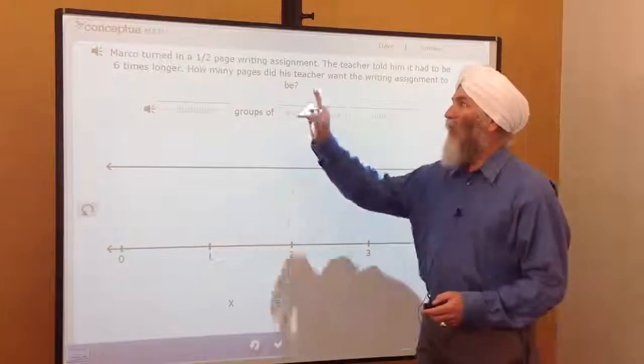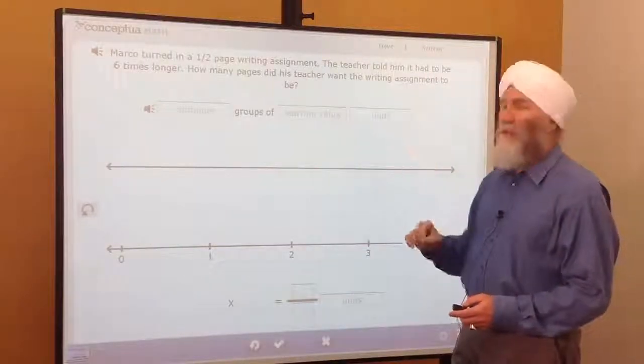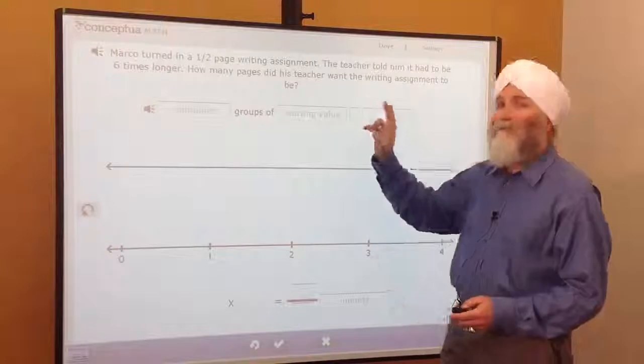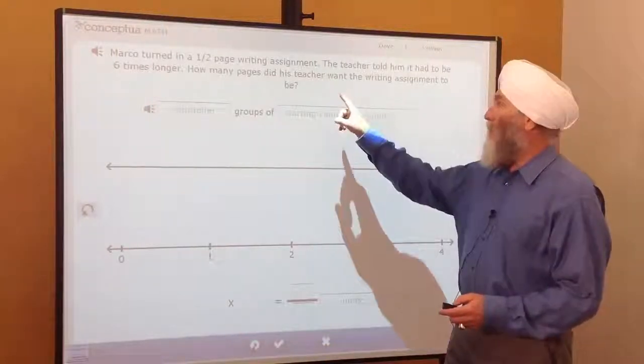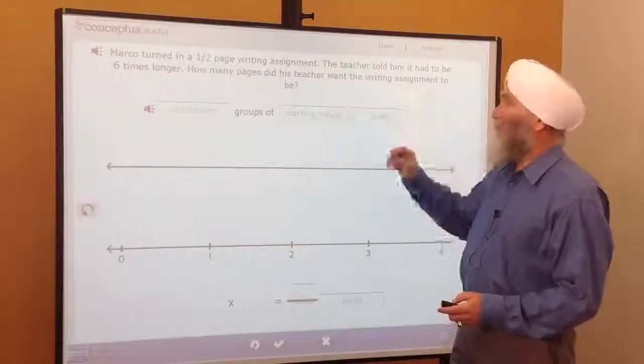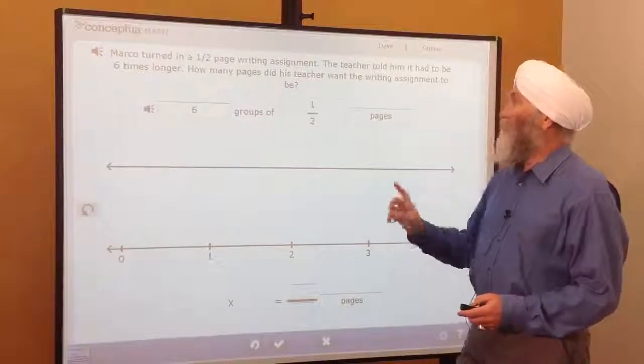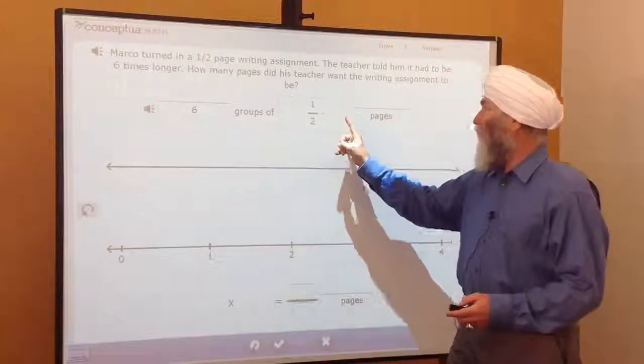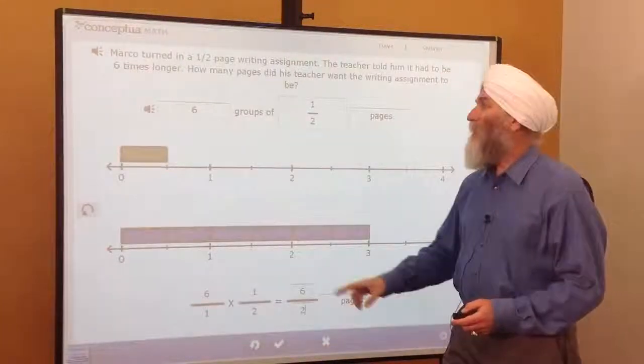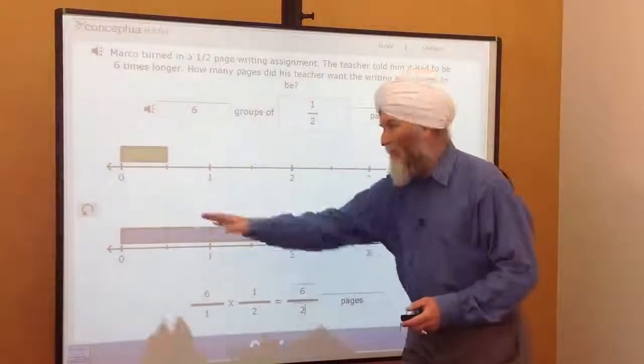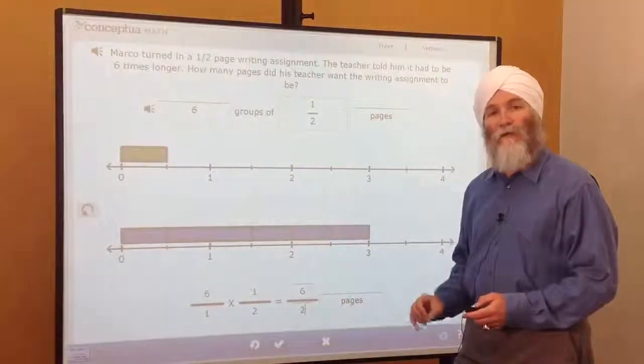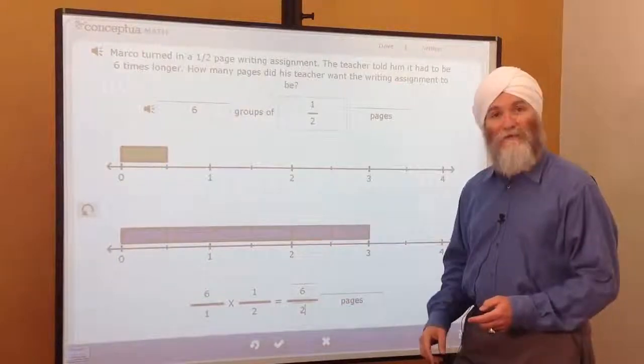Marco turned in a one-half page writing assignment. The teacher told him it had to be six times longer. How many pages did his teacher want the writing assignment to be? Six groups of one-half pages. He makes the one-half page, he makes the six groups, and now we can see the whole number answer. Six halves are three pages.